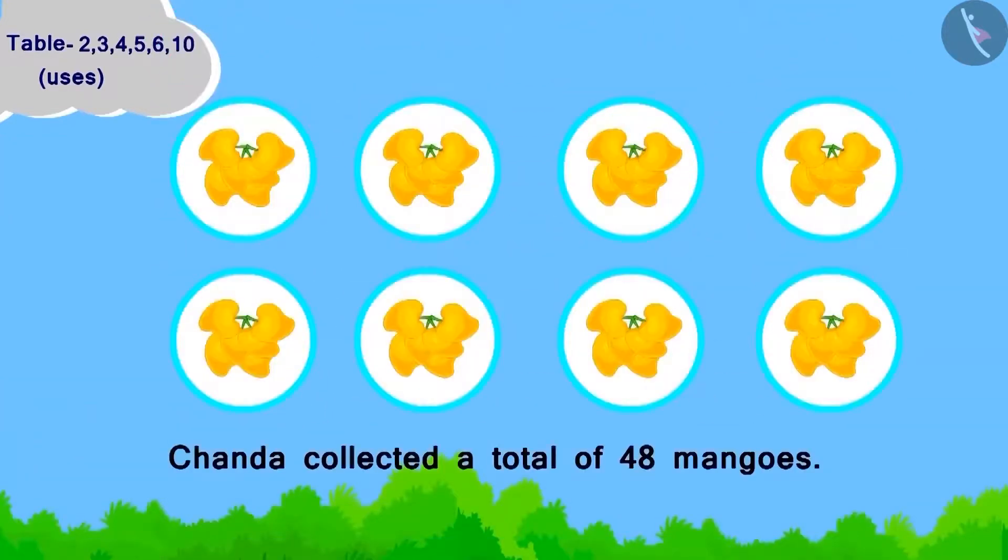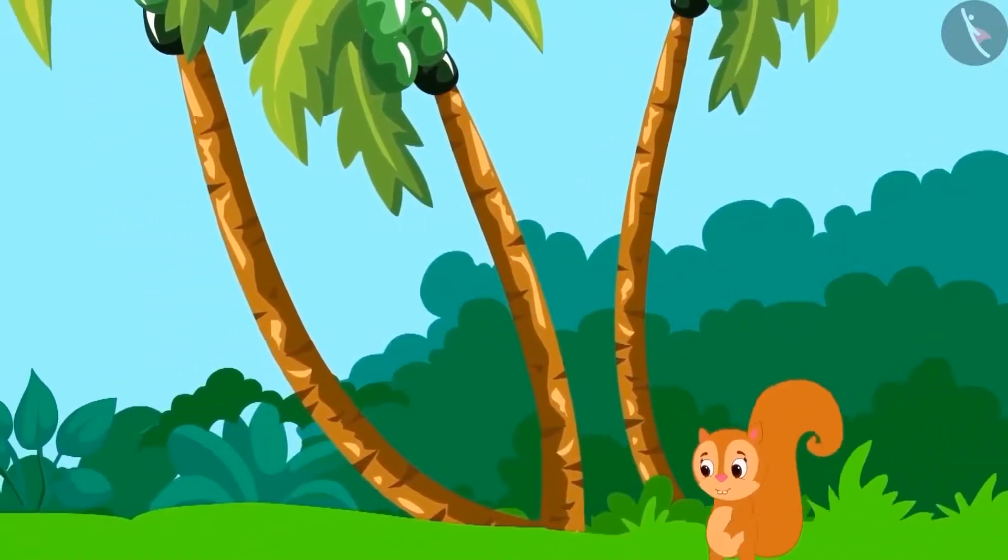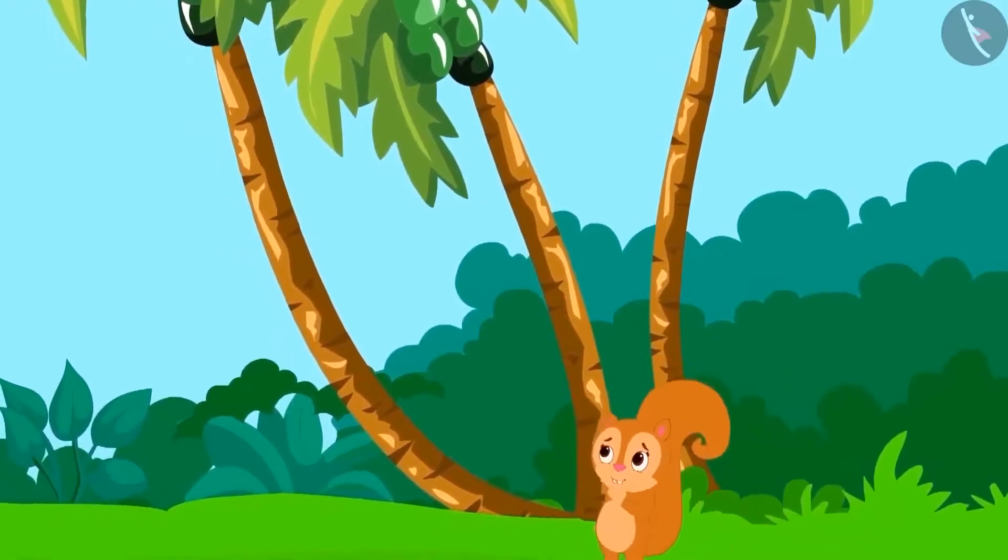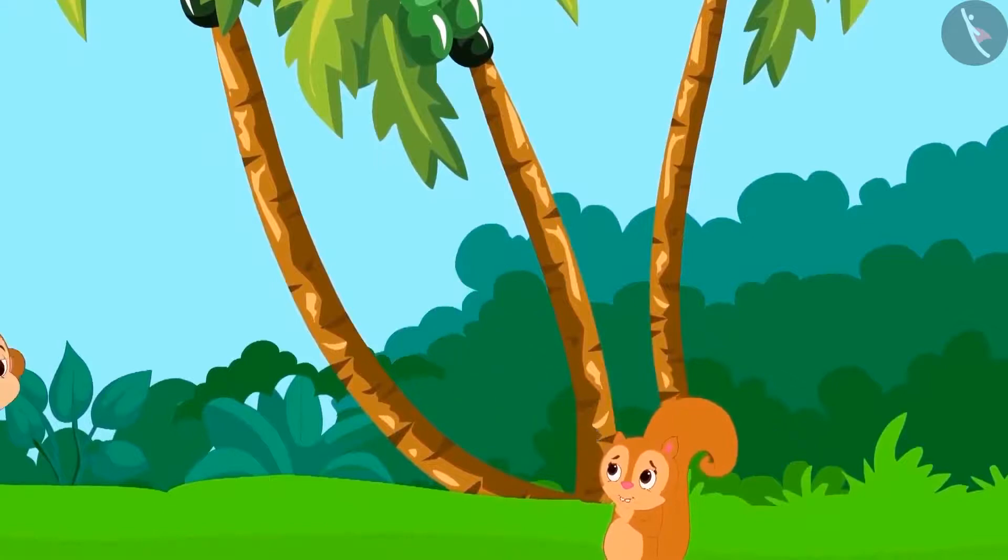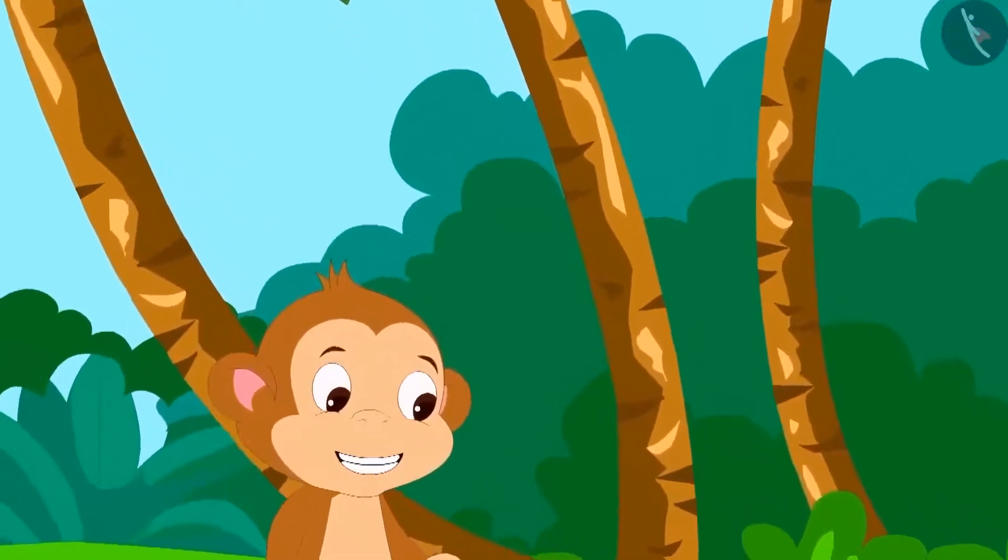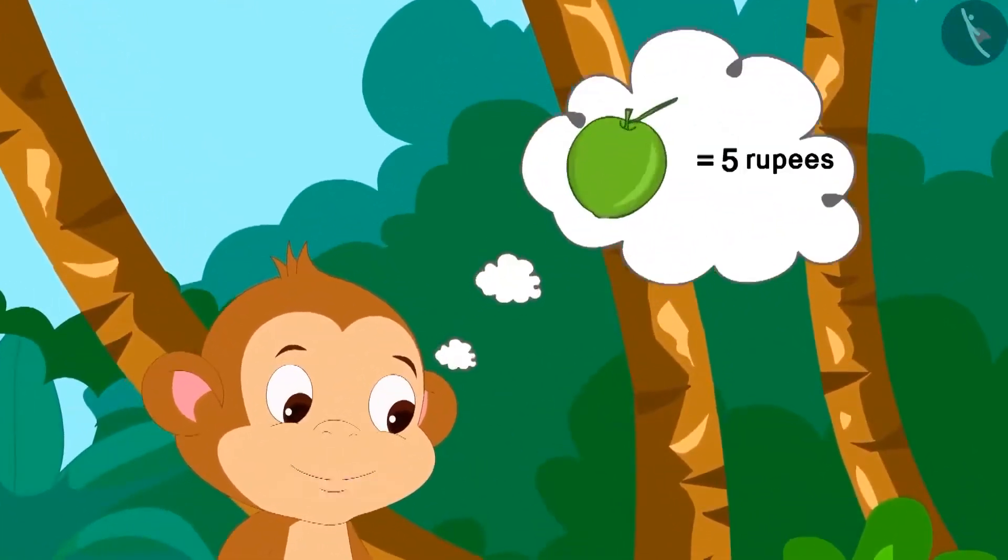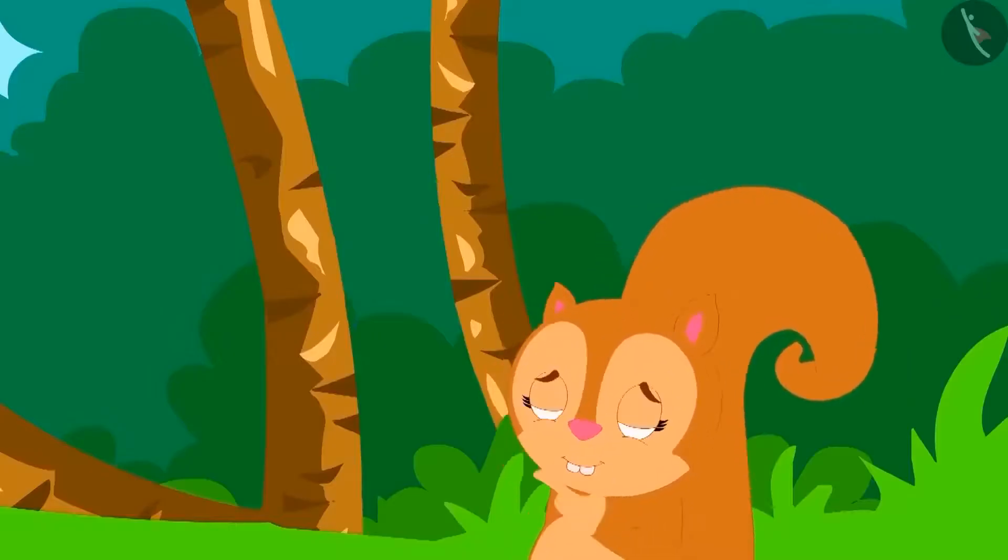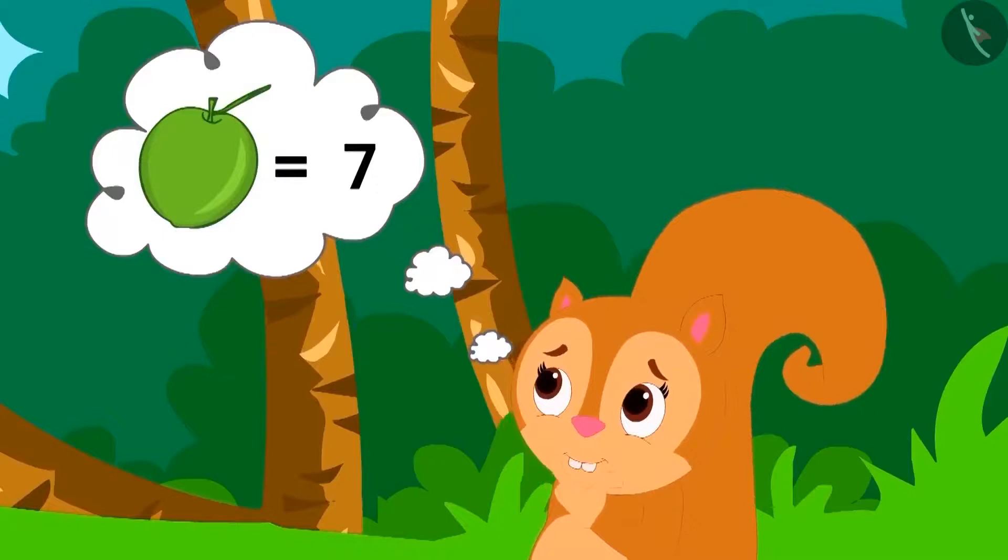Chanda collected a total of 48 mangoes. Now, Chanda had to pick coconuts from a coconut tree. But the tree was very high. Therefore, she called Babban for help. Babban told Chanda that he would take 5 rupees for picking each coconut. Chanda had to get a total of 7 coconuts picked.